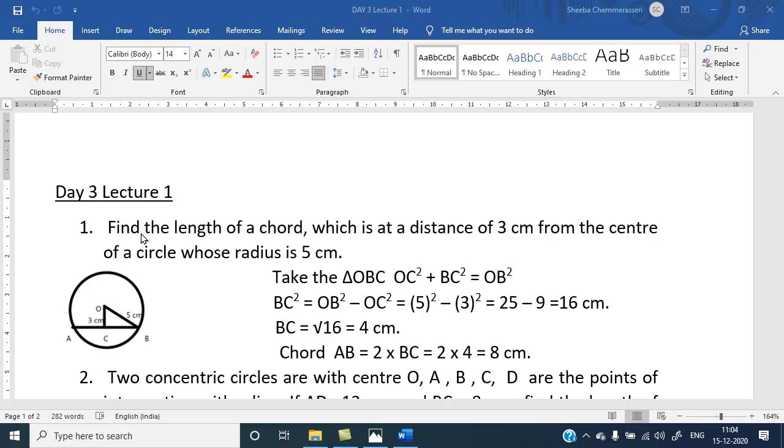First problem: Find the length of a chord which is at a distance of 3 cm from the center of a circle whose radius is 5 cm. So, this is the radius OB, 5 cm given. Distance of 3 cm from the center of a circle, so OC is 3 cm. We have to find the length of the chord AB.